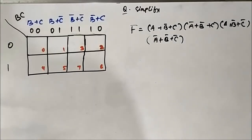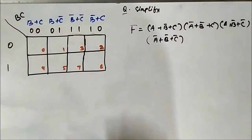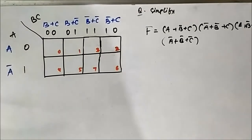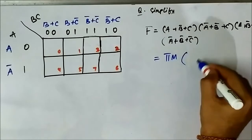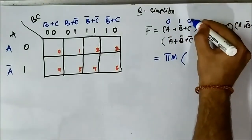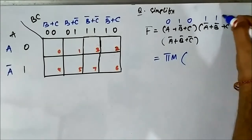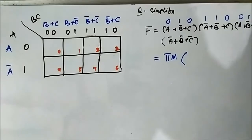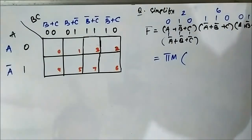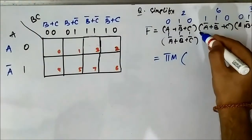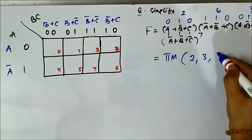Here is another question on POS KMAP simplification. We have this POS expression — a product of sums Boolean expression — and we will try to simplify it using the general format of the POS KMAP. We will write it in max term form: the terms evaluate to max terms 2, 3, 6, and 7. So the max term representation is M(2, 3, 6, 7).